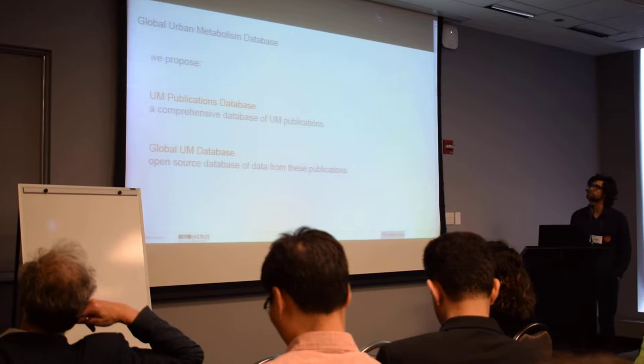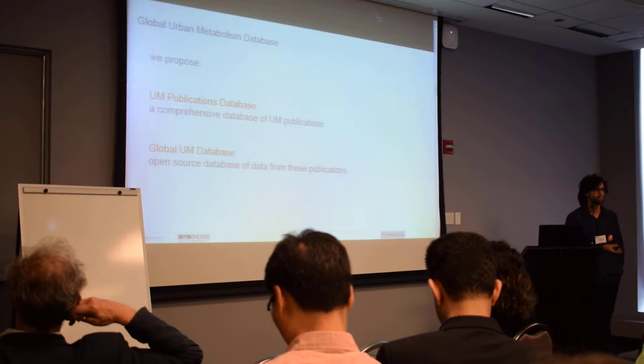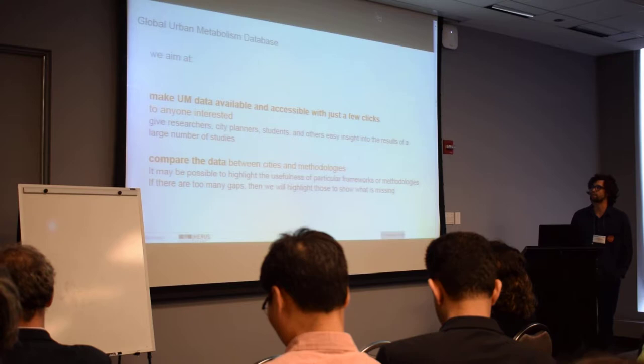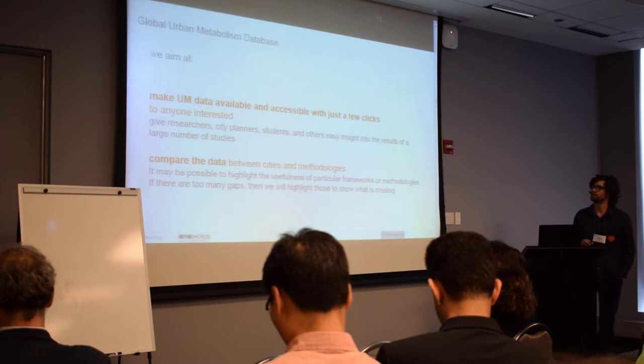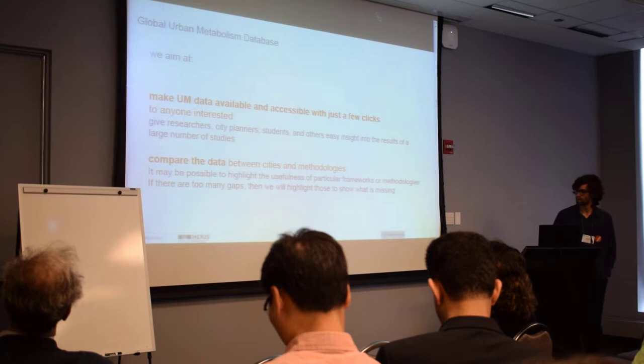We propose two basic datasets. One is composed of publications — an urban metabolism publication database. Then we extract data from those publications into a real database — an urban metabolism database containing the data itself, the figures. What we aim at is to make urban metabolism data available and easily accessible, so researchers throughout the world can access it and start to draw conclusions and understand patterns. The ultimate goal is to compare these and come up with scientific views over these flows, generalizations, and comparisons.